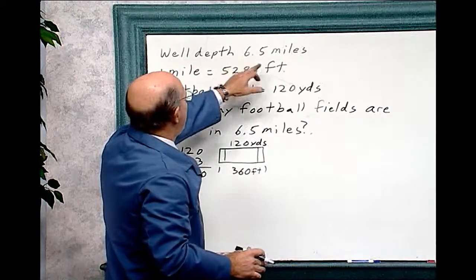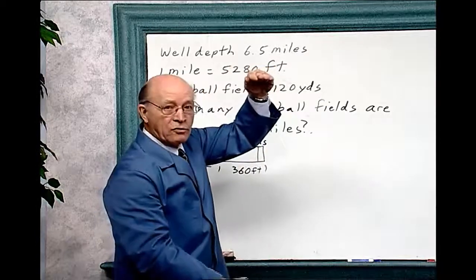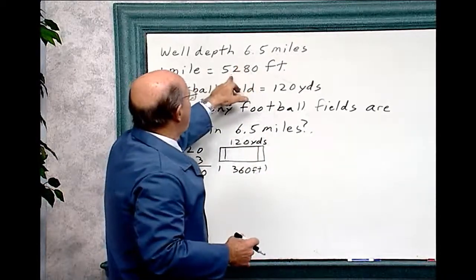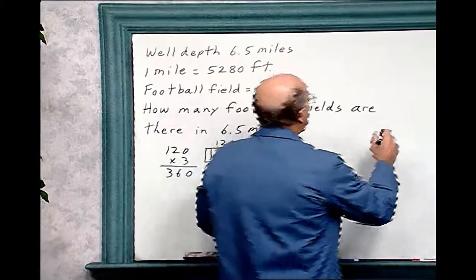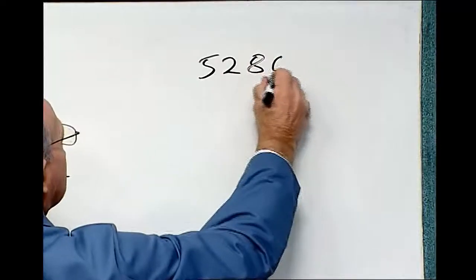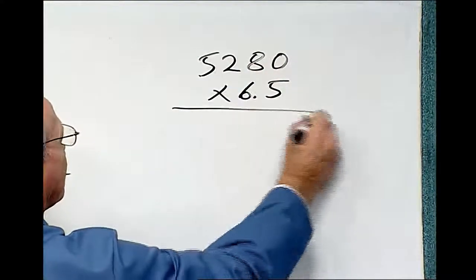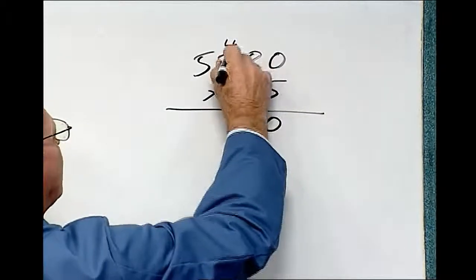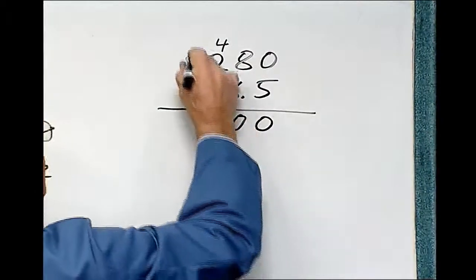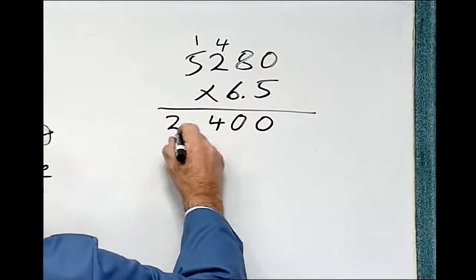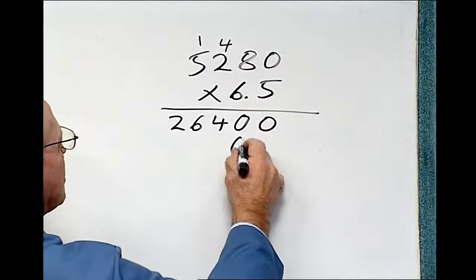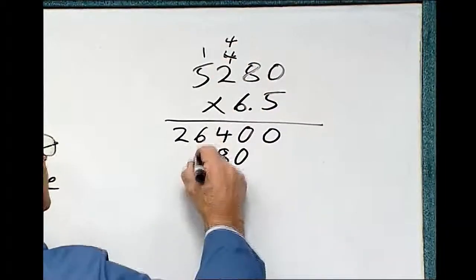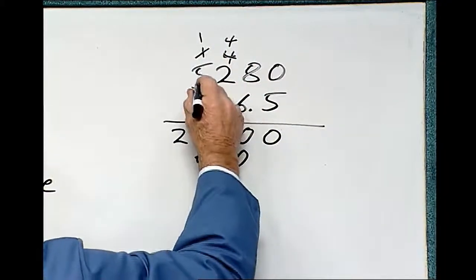Now that goes 6.5 miles down. Now think of that. From that ship all the way down, that drill bit goes down 6.5 miles. Now get an idea, how many football fields is that? So we've got to multiply 5,280 feet by 6.5 miles. Let's do that over here. 5,280 times 6.5. 5 times 0 is 0, 5 times 8 is 40. Carry the 4. 5 times 2 is 10, plus 4 is 14. 5 times 5 is 25, plus 1 is 26. 6 times 0 is 0, 6 times 8 is 48. 6 times 2 is 12, plus 4 is 16. 6 times 5 is 30, plus the 1 is 31.